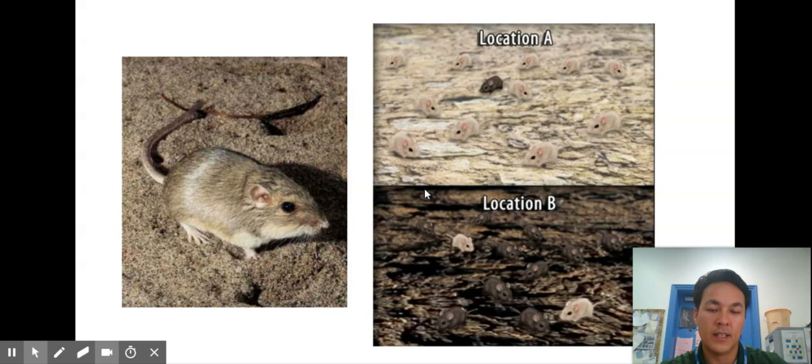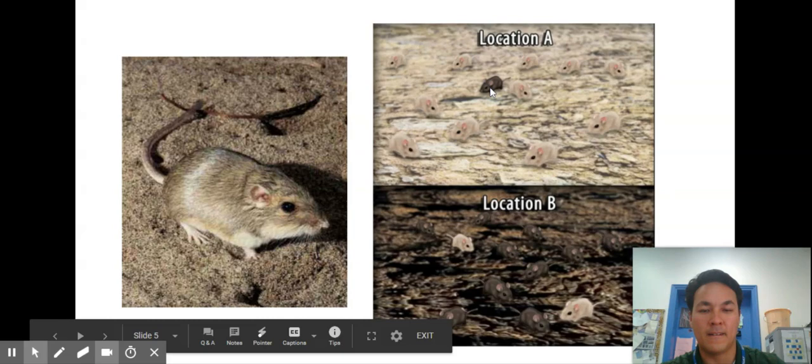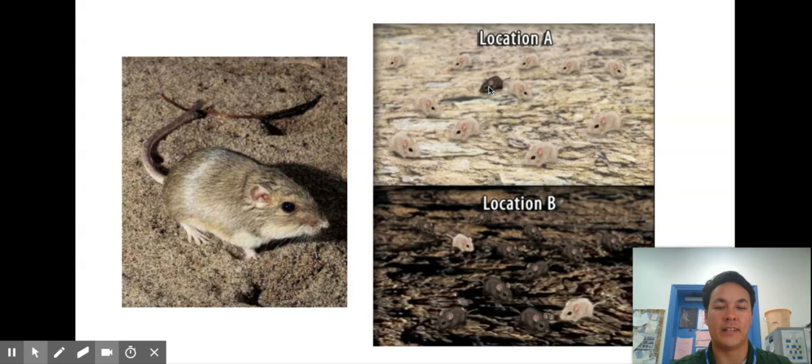The environment changes the lava flow happen. Well now all of a sudden this dark mouse is going to be selected for. This dark mouse is going to have an advantage in differential reproductive success. It'll be more likely to reproduce and you can see the spread of the dark genes over time.